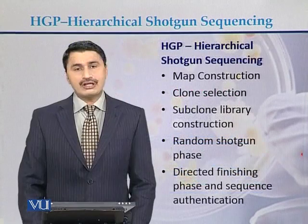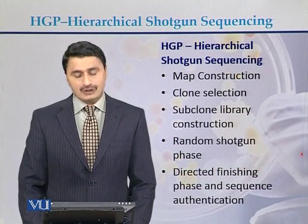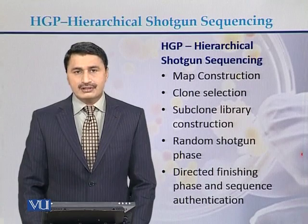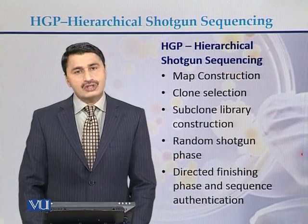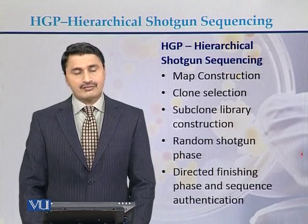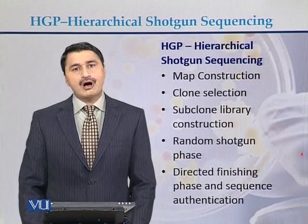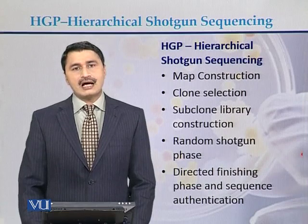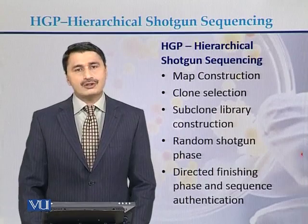To conclude: hierarchical shotgun sequencing involves the following steps. The first step was map construction. The second step was clone selection. The third was subclone library construction. The fourth was a random shotgun phase. The last step was sequencing of the smaller fragments cloned into plasmid vectors. This was the methodology used to sequence the human genome via hierarchical shotgun sequencing.